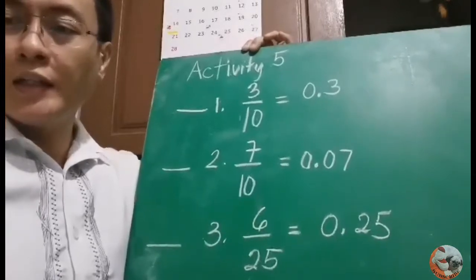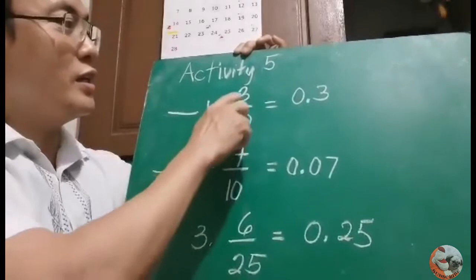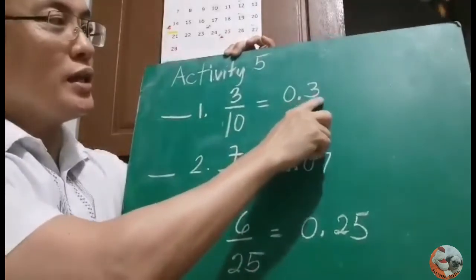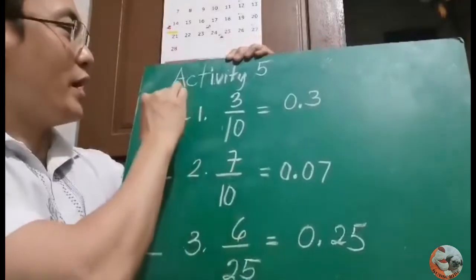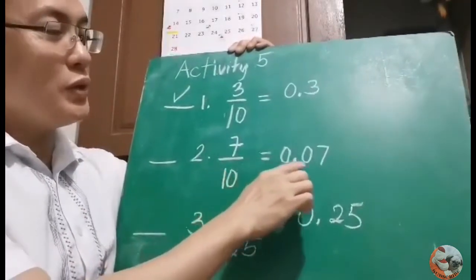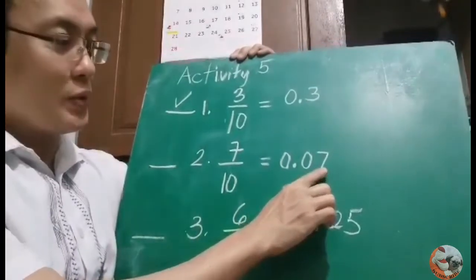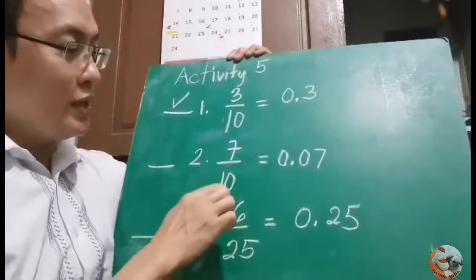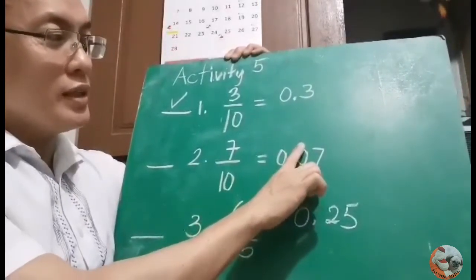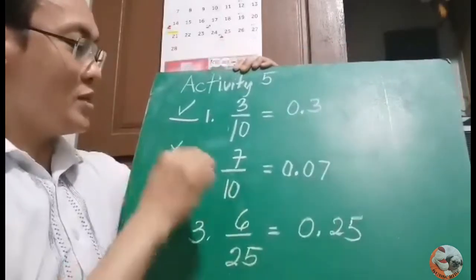Activity 5 is all about solve and check. Let's check: 3 tenths is equal to 0.3 — how do you read this? That is 3 tenths. So this is correct. For 7 tenths equal to 0.07 — how do you read 0.07? Tenths, hundredths — that is 7 hundredths. If there is only one zero, it should be 7 tenths, but this says 7 hundredths. So it is wrong.